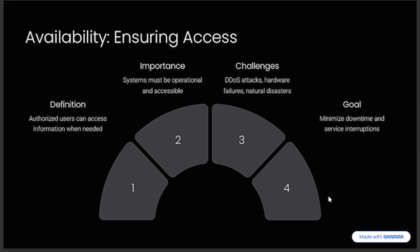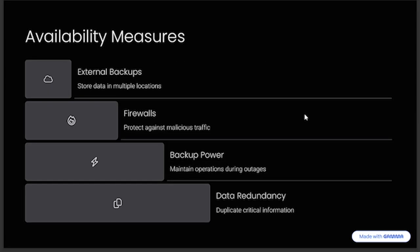The last component is availability — making sure that authorized parties are able to access information when needed. Systems must be operational and accessible. Challenges include DDoS attacks, hardware failures, and natural disasters, which can prevent availability. The goal is to minimize downtime and service interruptions.